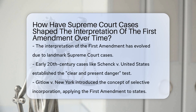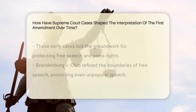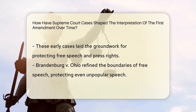The interpretation of the First Amendment has evolved significantly through landmark Supreme Court cases. In the early 20th century, cases like Schenck v. United States and Gitlow v. New York established the concept of clear and present danger and selective incorporation, respectively. These cases laid the foundation for protecting free speech and press rights.